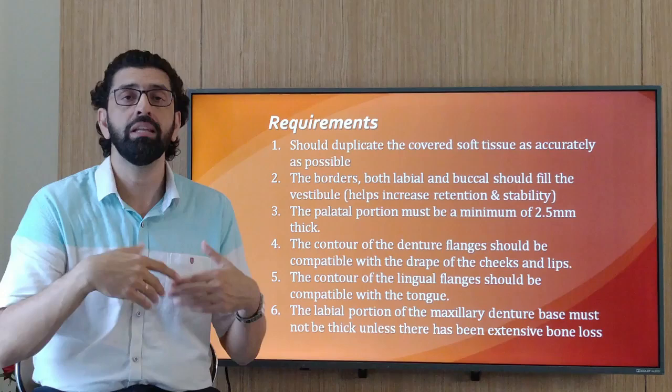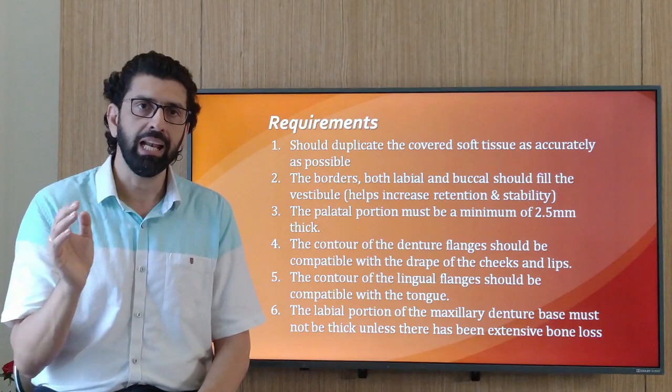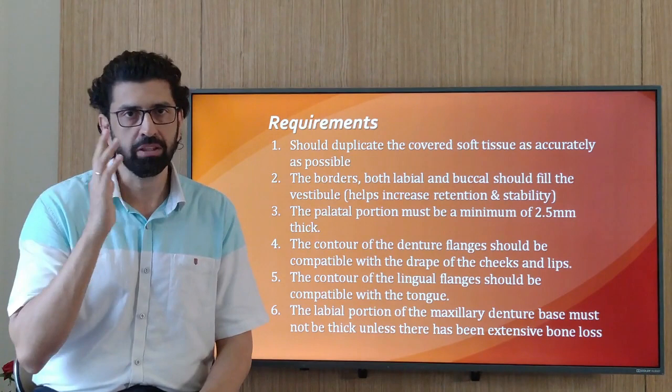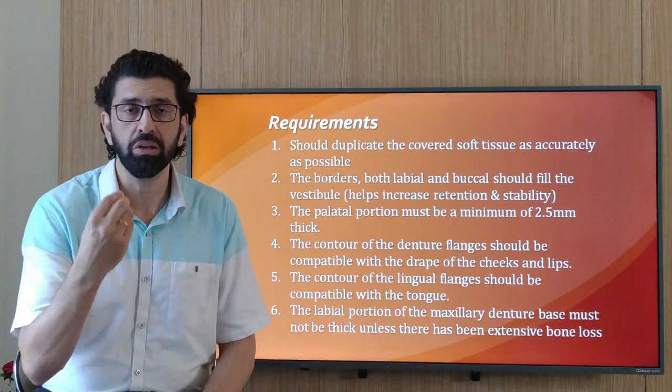The third requirement is that the palatal portion of the denture base needs to be at least 2.5 mm thick. Remember that when finishing, you'll be trimming and polishing the palatal aspect, losing about 0.5 mm. So keeping it at 2.5 mm means it comes down to 2 mm after finishing, and a minimum thickness of 2 mm gives you enough strength.